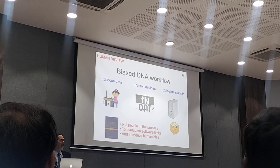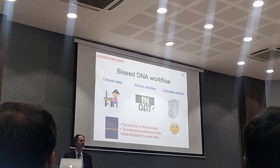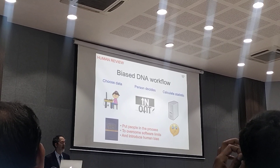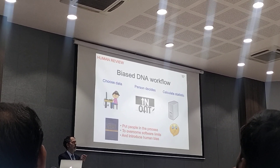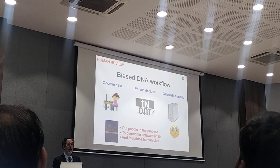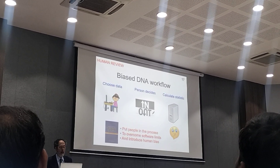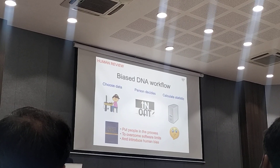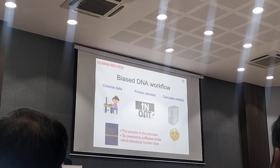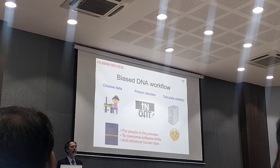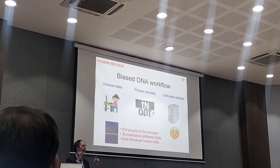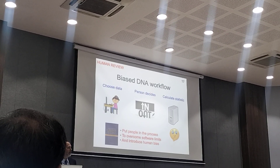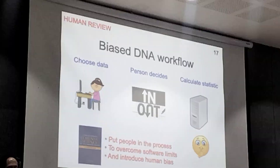Instead, you take the data, a person looks at it and applies thresholds — something's in the list, something's not. They play with the data. Depending on the software, they might adjust dropout values or adjust thresholds, completely changing the statistic. Then a person decides whether the defendant is there or not. And in most protocols like this with thresholds, only after the analyst has chosen their data and decided what the answer is do they calculate a statistic. It's the exact opposite of most scientific results.